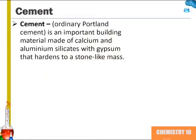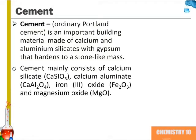The third material that we'll review is cement, or ordinary Portland cement. It is an important building material made of calcium and aluminum silicates with gypsum that hardens into a stone-like mass. Cement mainly consists of calcium silicate, calcium aluminate, iron three oxide, and magnesium oxide.